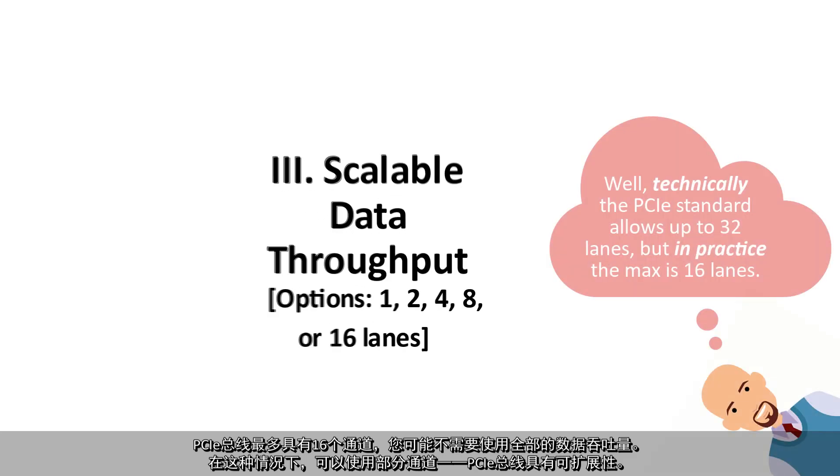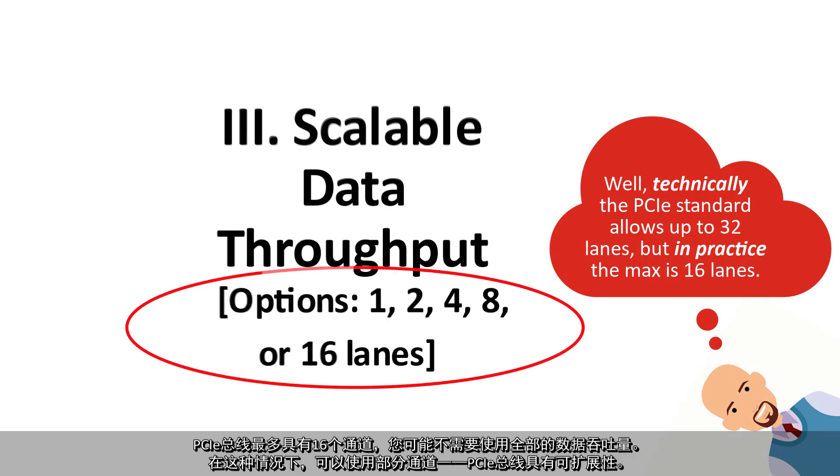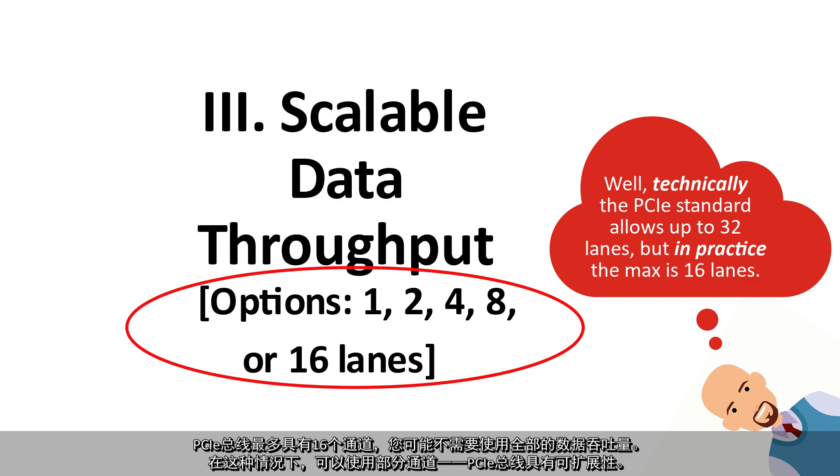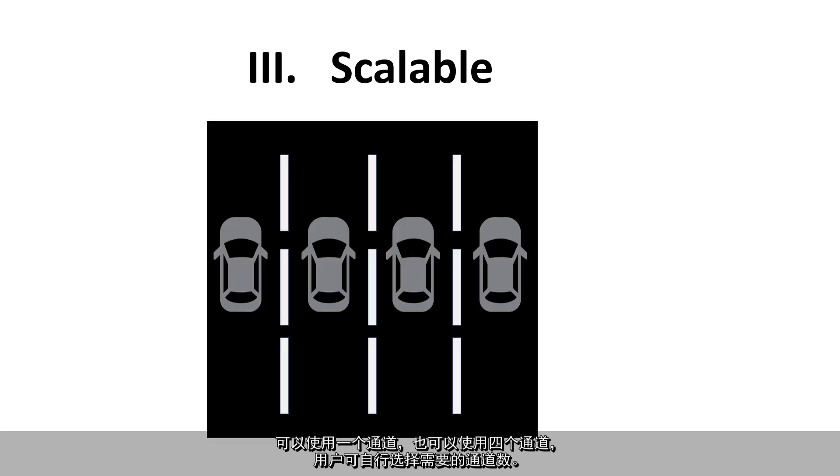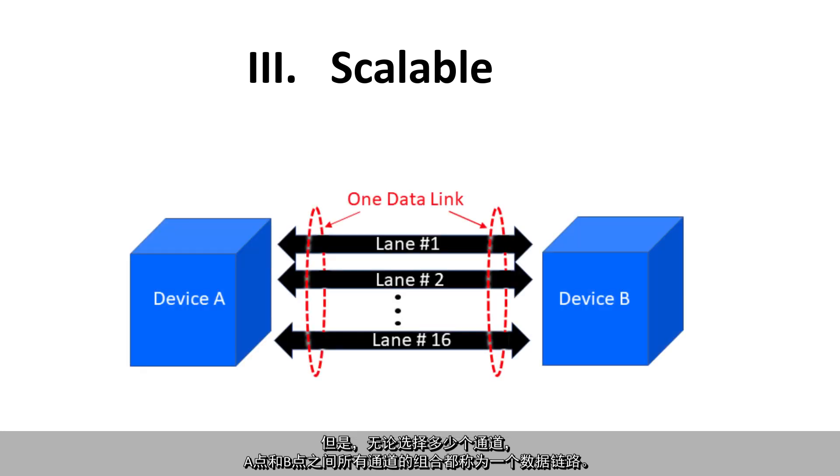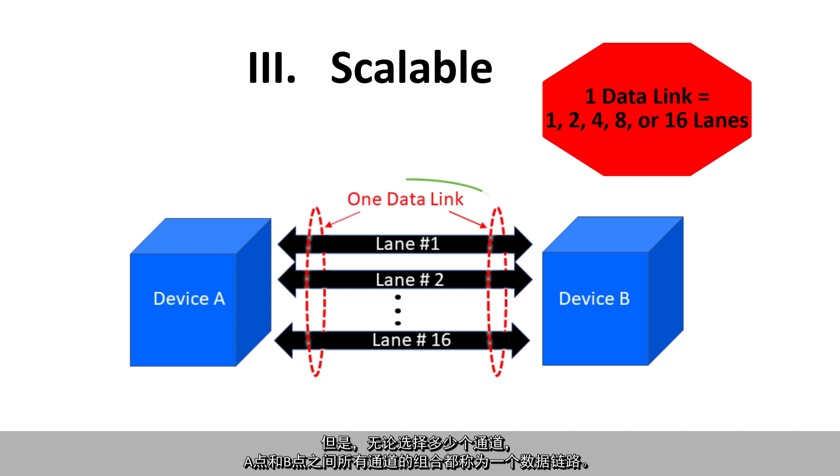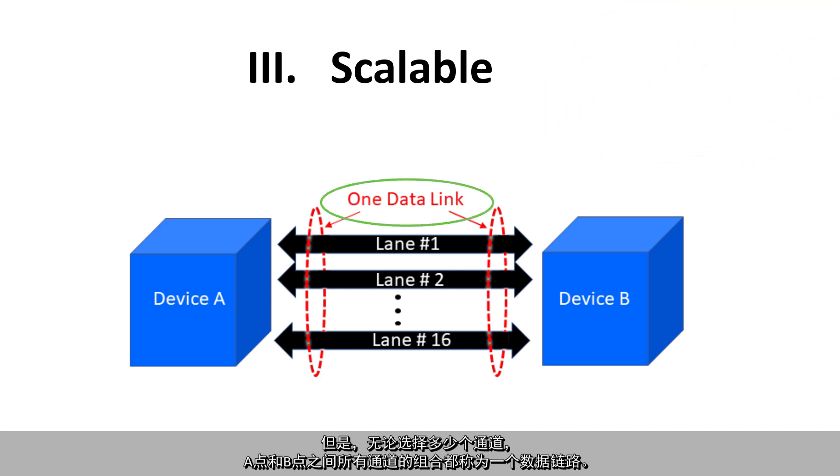There may be times where you do not need the full data throughput of the maximum 16 lanes available in a PCIe bus. In that case, you can use fewer lanes. It is scalable. You perhaps use one lane, perhaps four. You can choose your number of lanes. But in any case, no matter how many lanes you choose, the combination of all those lanes between point A and point B is called one data link.